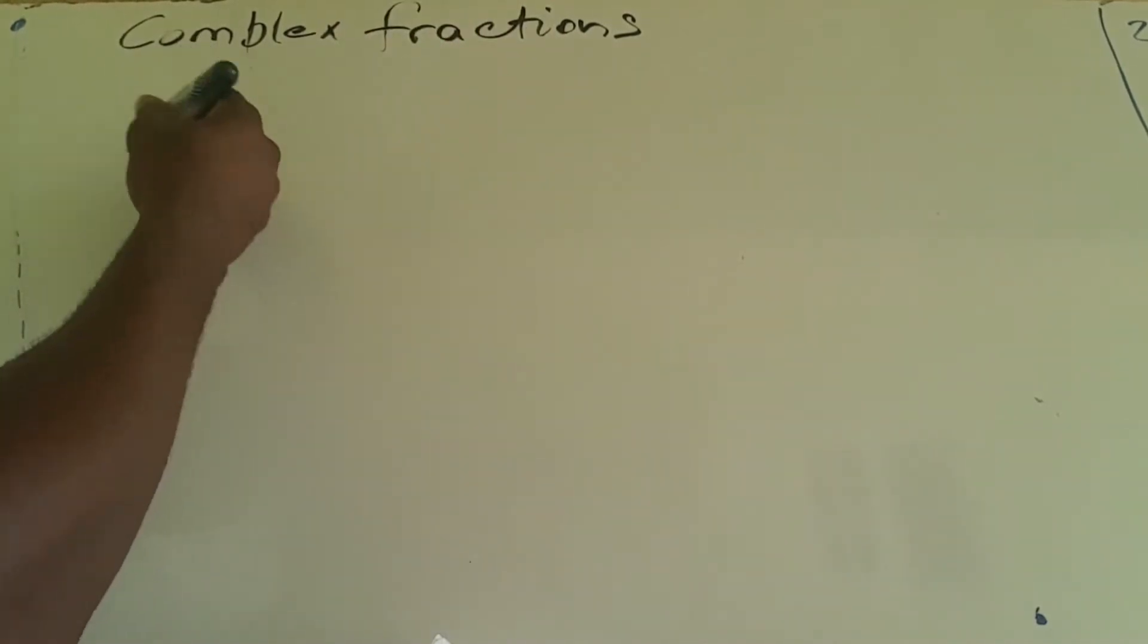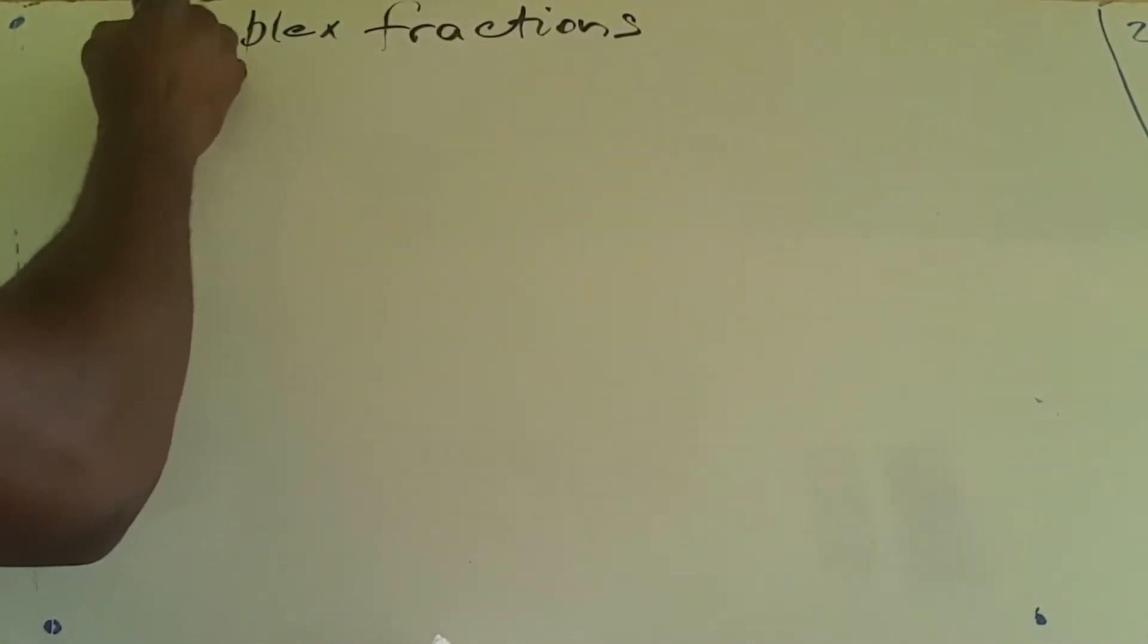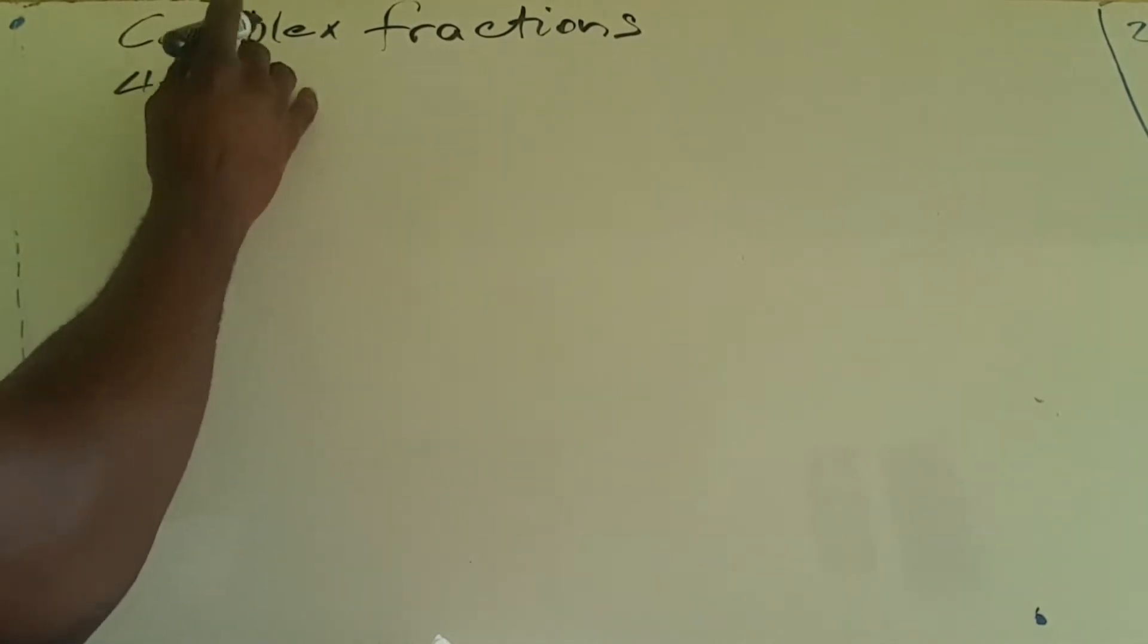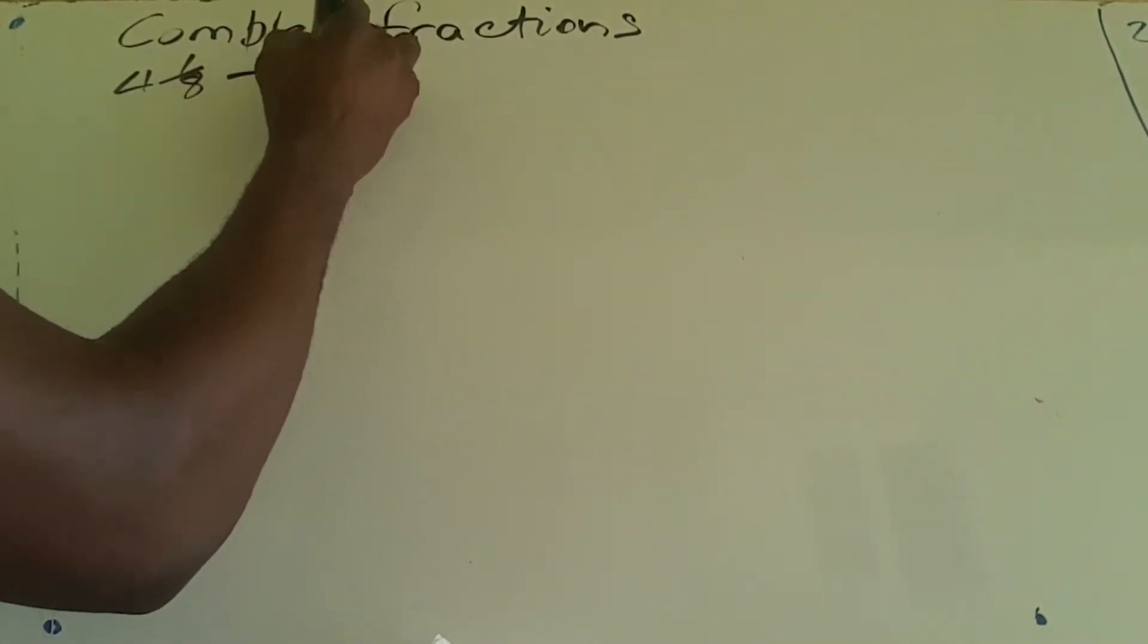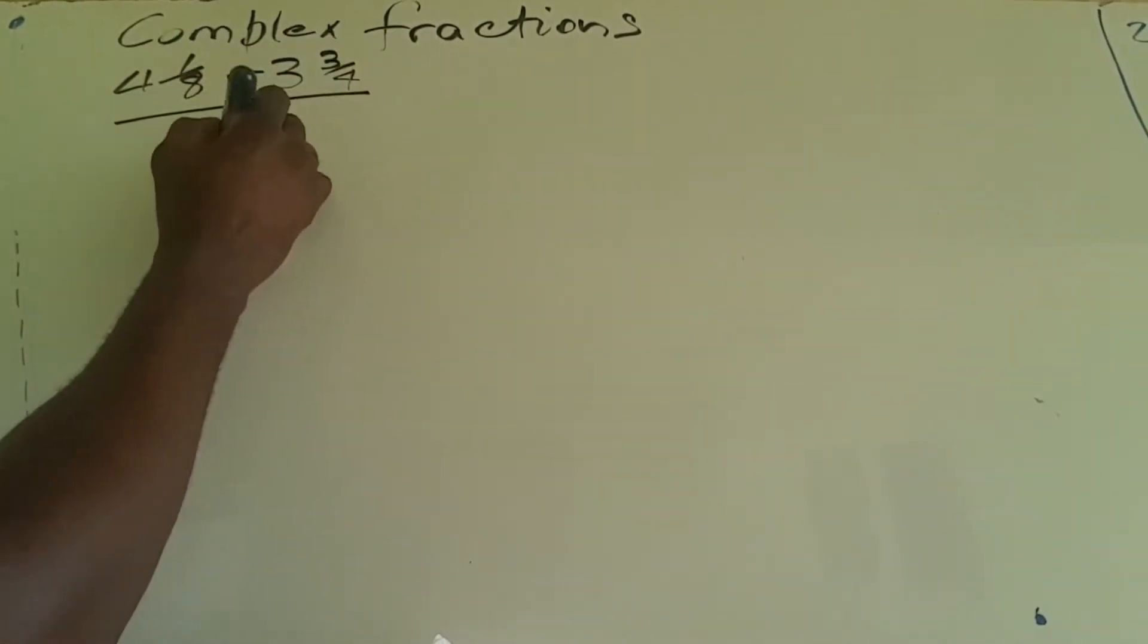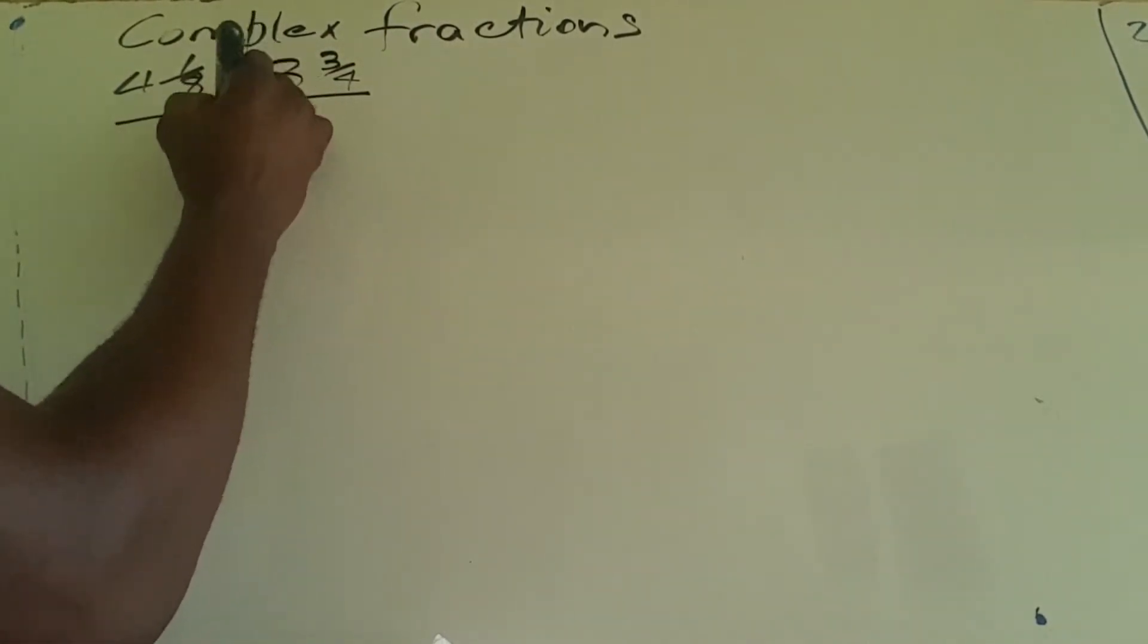Let's look at the first example. We have 4 and 1/8 minus 3 and 3/4, all over 1 and 1/7.